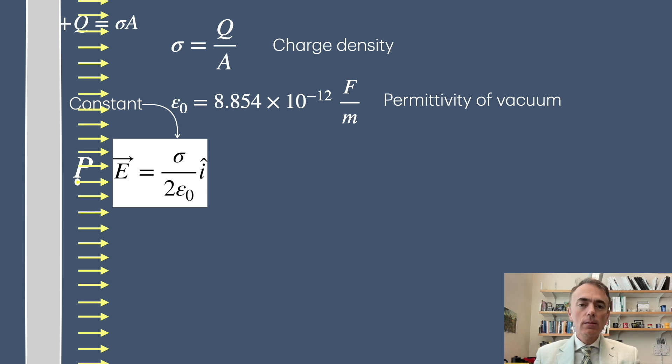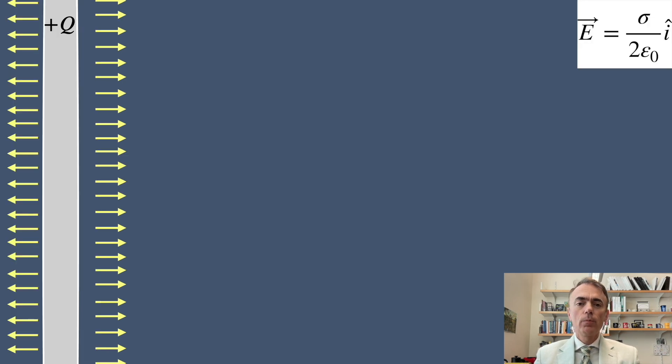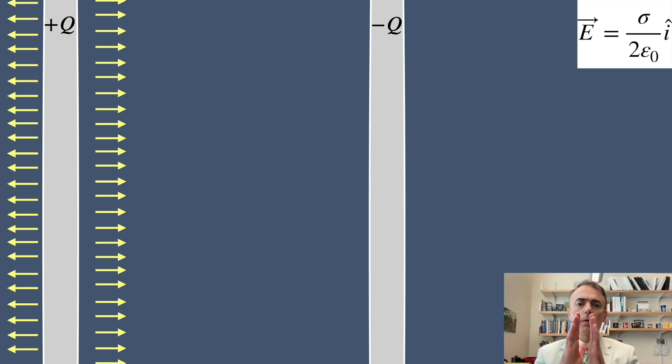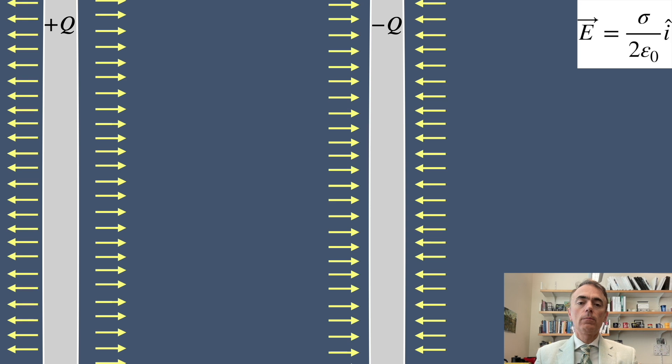Now let's take things a step further. What happens if we place two parallel plates near each other? One with a positive charge plus q and the other with a negative charge minus q. Each plate can be thought of as a large disk of charge but now instead of a single disk we have two of them facing each other.